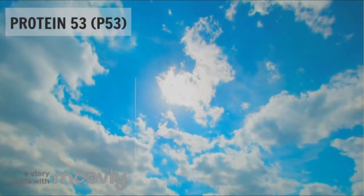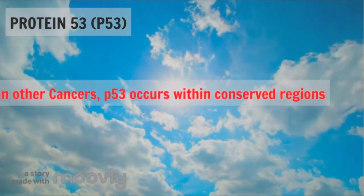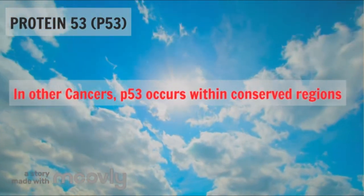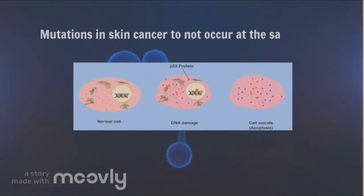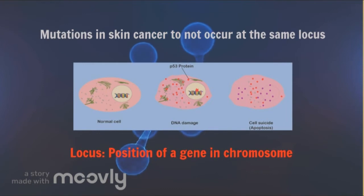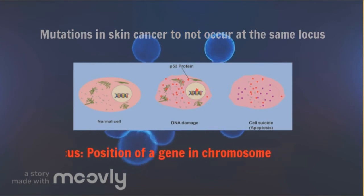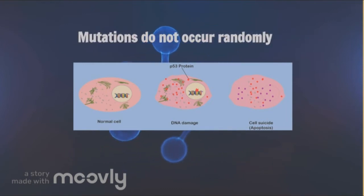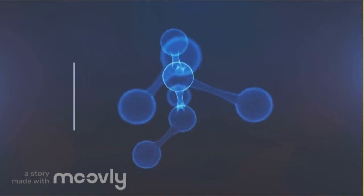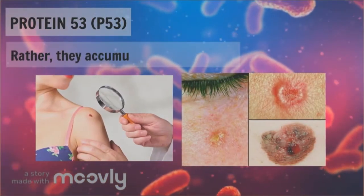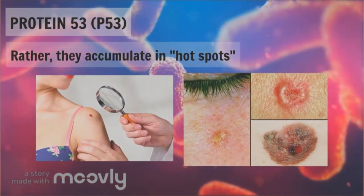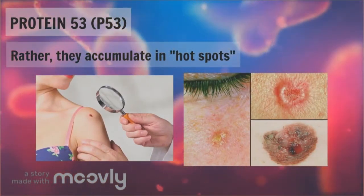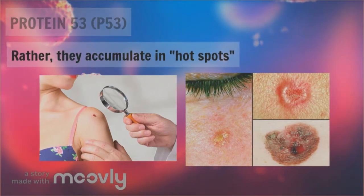This is opposed to other cancers, in which p53 mutations usually occur within conserved regions. Although p53 mutations in skin cancer do not consistently occur at the same locus, mutations do not occur randomly. Rather, these UV signature mutations accumulate in specific hot spots, which are different from regions of p53 that are mutated in internal malignancies.